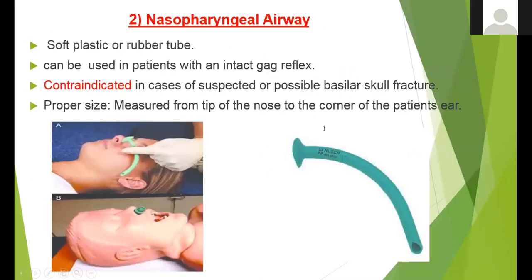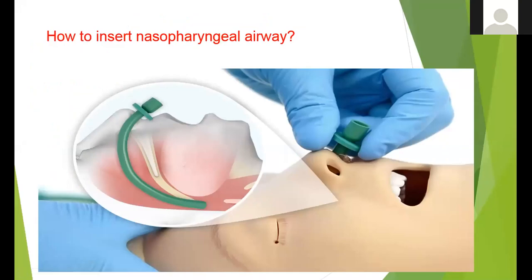There is another device called the nasopharyngeal airway. We can use this for a patient who is conscious and has an intact gag reflex. It is a soft plastic or rubber tube, but it is contraindicated if you suspect a basal skull fracture to avoid brain injury. To choose the proper size, measure from the nostril to the tragus of the ear. Insert it in the direction shown, push it through the nostril, and you can also do suction through it or use it during bagging.